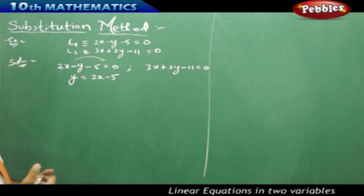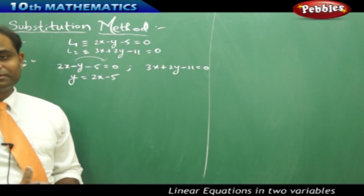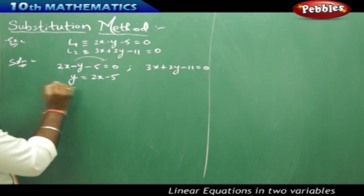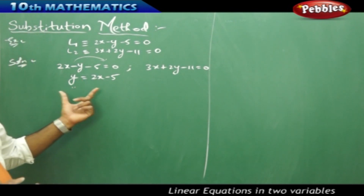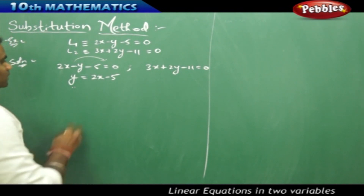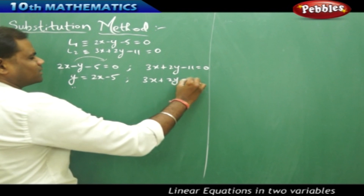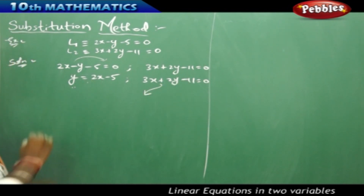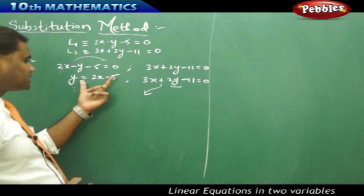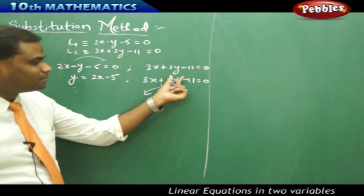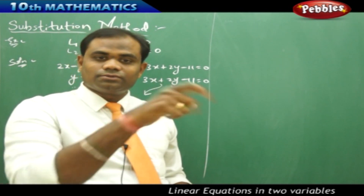In the substitution method, always choose the variable with coefficient 1 to substitute — this makes simplification easier. This is the rule to follow. So taking y as 2x minus 5, I substitute this into L2: 3x plus 2y minus 11 equals 0, replacing y with 2x minus 5. This is why the method is called substitution — we substitute one variable's expression into the other equation.